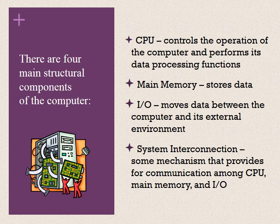The four main structural components are: the central processing unit (CPU), which controls the operation of the computer and performs its data processing functions — often simply referred to as the processor; main memory, which stores data; I/O, which moves data between the computer and its external environment; and system interconnection, which provides communication among CPU, main memory, and I/O. A common example of system interconnection is the system bus, consisting of a number of conducting wires to which all other components are attached.